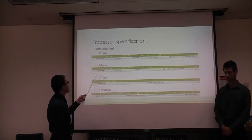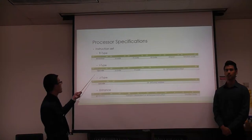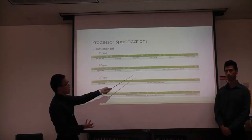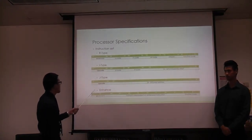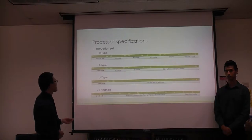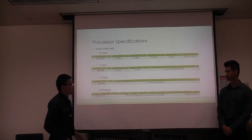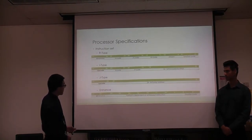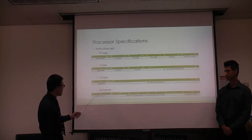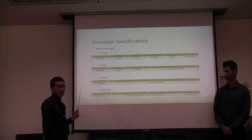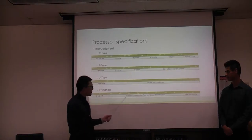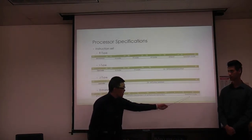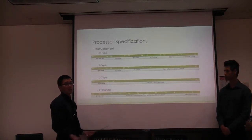The I-type format has an opcode, two operand fields, and a 16-bit immediate value used during computation. The J-type format has an opcode and a 26-bit jump address. The enhanced instruction format has the top six bits set to 0x1F as our key, with dependent middle fields, and the lower six bits always being the function code for the enhanced instruction type.